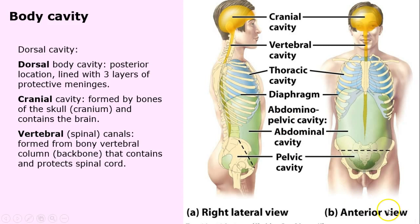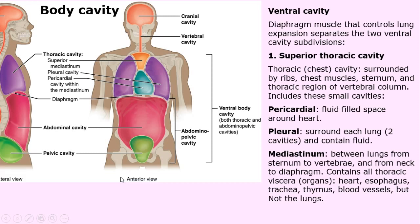There's the anterior view on the far right, so that's the front, and then the lateral view shows the cranial and vertebral column. Now the ventral cavity — that's where a lot of the action is. The diaphragm is an important division; it's an apron of tissue that helps to ventilate our lungs.